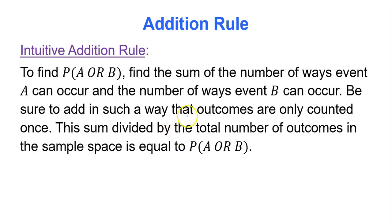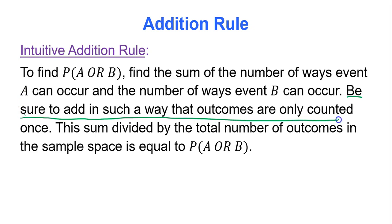The intuitive rule is to find the sum of the number of ways event A can occur and the number of ways event B can occur, but add in such a way that outcomes are only counted once — no double counting. This sum divided by the total number of outcomes gives you the OR probability.